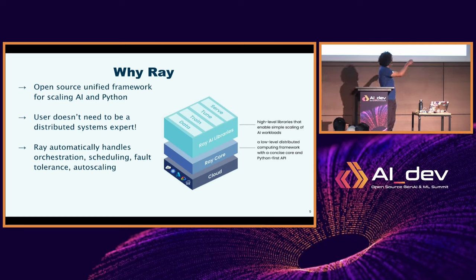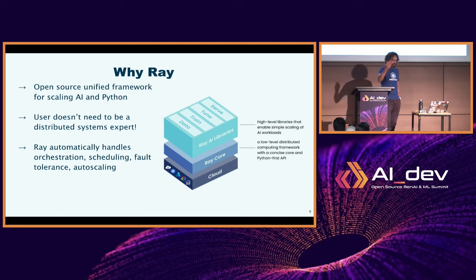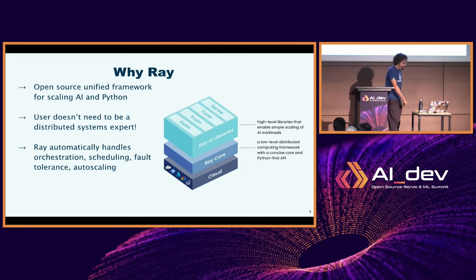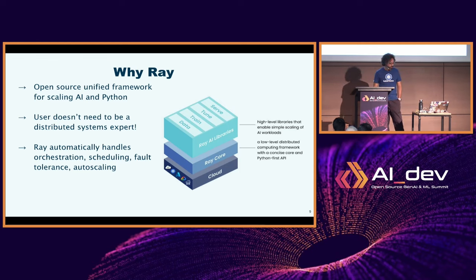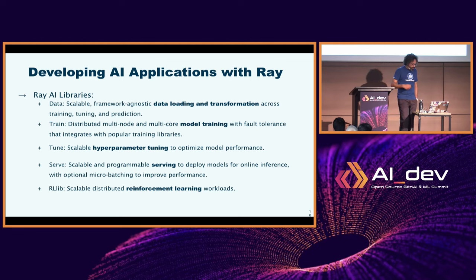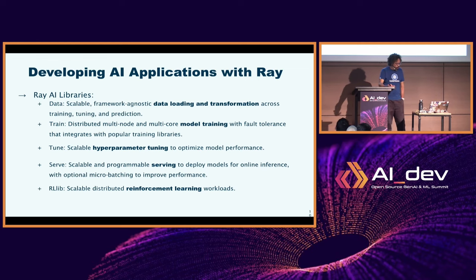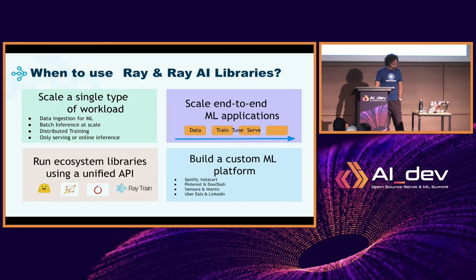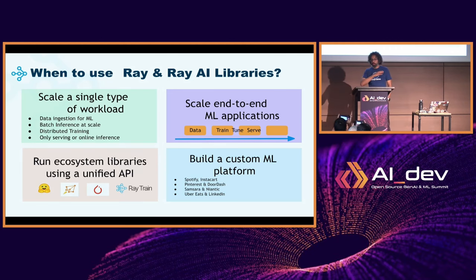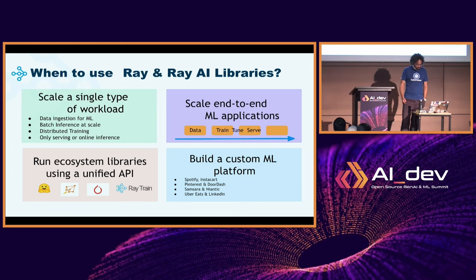The community maintains the two top layers - the core and the AI libraries. Then the bottom layer is up to each cloud provider. Today you can run Ray on Google Cloud, Azure, or AWS, both on VMs and Kubernetes. You can also run it on any standard Kubernetes cluster. The whole point is being a standard single tool that you can learn to do the entire lifecycle of machine learning and then also use to run your workloads.